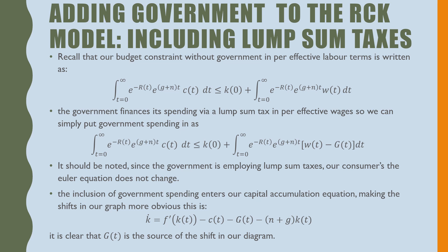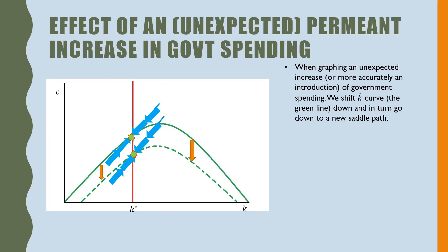Let's talk about the effect of an unexpected increase in government spending. When graphing an unexpected increase — or more accurately, the introduction of government spending — we shift the k-dot curve down, which is the green line, and show that it shifts down to a new saddle path. It's just a vertical shift down.